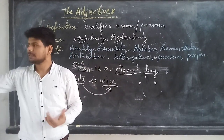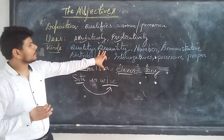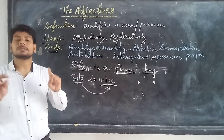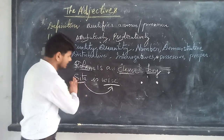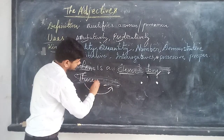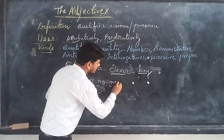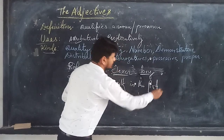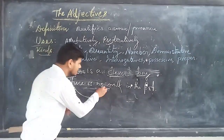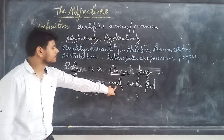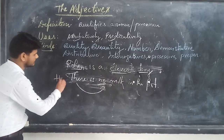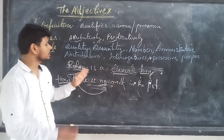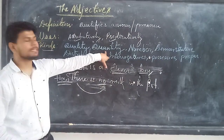Second, we will talk about adjectives of quantity — used when we talk about how much. For example, 'There is no milk in the pot.' Here, the word 'no' is an adjective because it comes in front of 'milk' and tells us how much. It talks about the quantity of the milk — the quantity is none. So the word 'no' here is called an adjective of quantity.